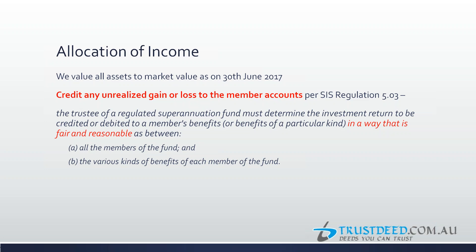For auditors, I'm not sure how many actually check how much unrealized gain is being credited to one particular member. Most software adds up all income — realized capital gains plus all other income — and then allocates it. Contributions get directly credited to member accounts, but all other income including unrealized and realized gains are pooled.